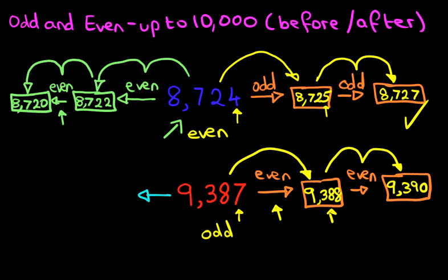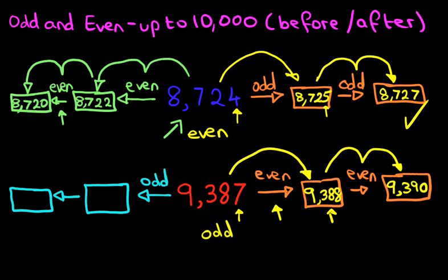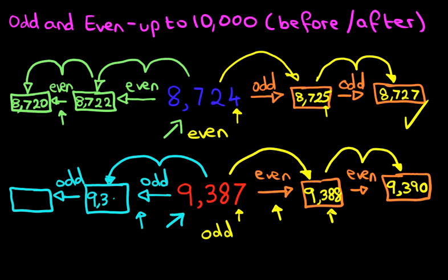Now this part of the question — the very last part — is: what are the two odd numbers before this number? Now we know that this number is an odd number — we already worked that out. So therefore, to work out the odd number before it, we have to count back in 2's. So what number comes before this one? That's 9,386. And before that it is 9,385. So we've counted back by 2. And now to work out the odd number here, we simply count back by 2 again, and this becomes 9,383.